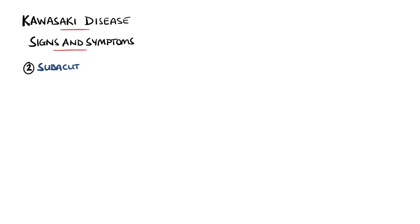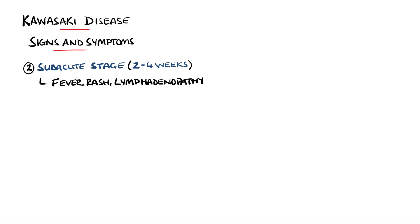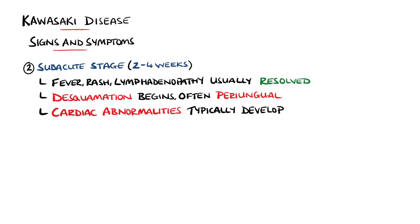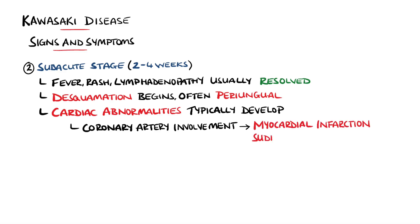The subacute stage lasts around two to four weeks, at which point the fever, rash, and lymphadenopathy have usually resolved. It is at this stage that desquamation, meaning a peeling of the skin, starts, particularly around the nails. Cardiac abnormalities such as aneurysms most typically develop at this stage, and it is important to remember that involvement of the coronaries can lead to myocardial infarction and sudden cardiac death.